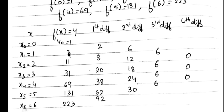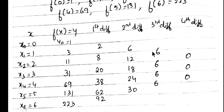Now calculate the first differences: 3 - 1 = 2; 11 - 3 = 8; 31 - 11 = 20; 69 - 31 = 38; 131 - 69 = 62; 223 - 131 = 92. Second differences: 8 - 2 = 6; 20 - 8 = 12; 38 - 20 = 18; 62 - 38 = 24; 92 - 62 = 30. Third differences: 12 - 6 = 6; 18 - 12 = 6; 24 - 18 = 6; 30 - 24 = 6. Fourth differences: 6 - 6 = 0; 6 - 6 = 0; 6 - 6 = 0.